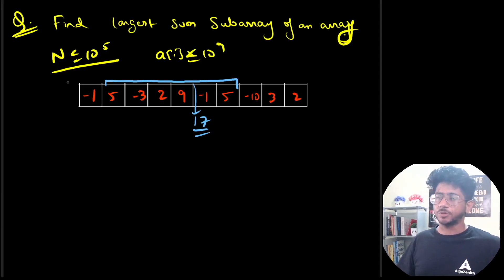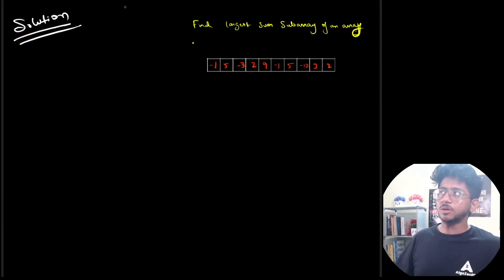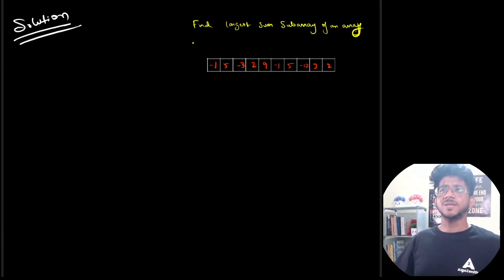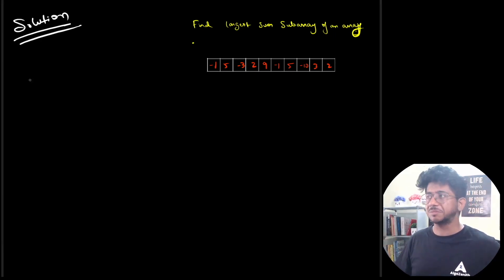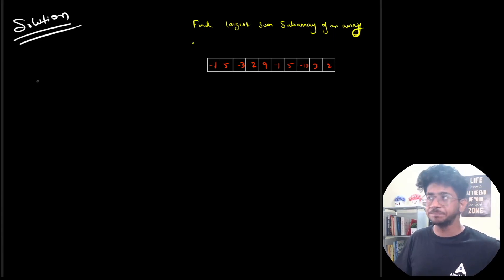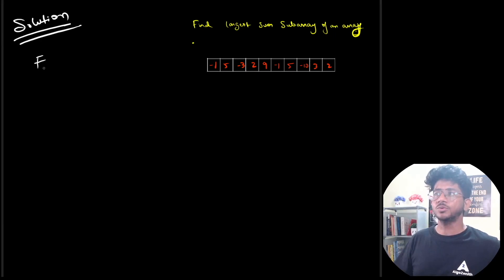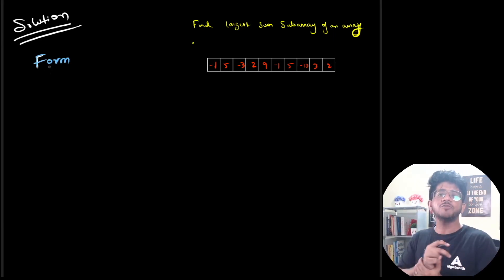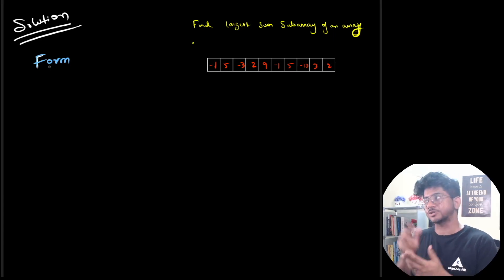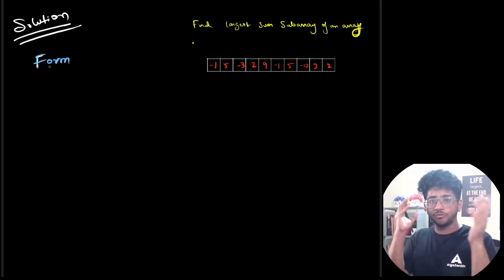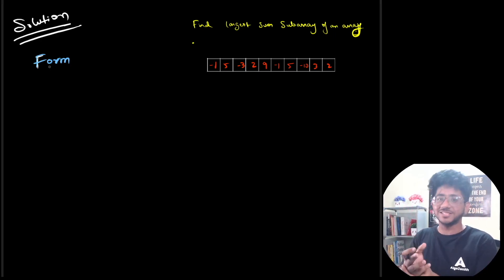This is a very classical problem. The idea is how do you actually solve it with DP? Many of you might already know this — something like Kadane's — but how do you solve it with DP? It turns out this is a very elegant problem of form two. We can use form two for this one. You can also use form one; there's a video on my channel called multi-level DP, but we'll use form two here.